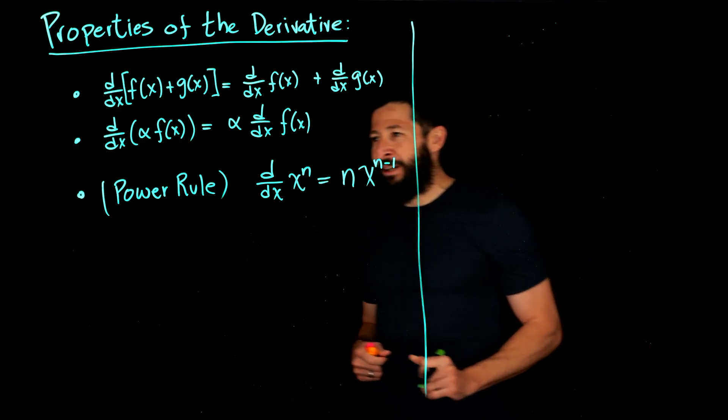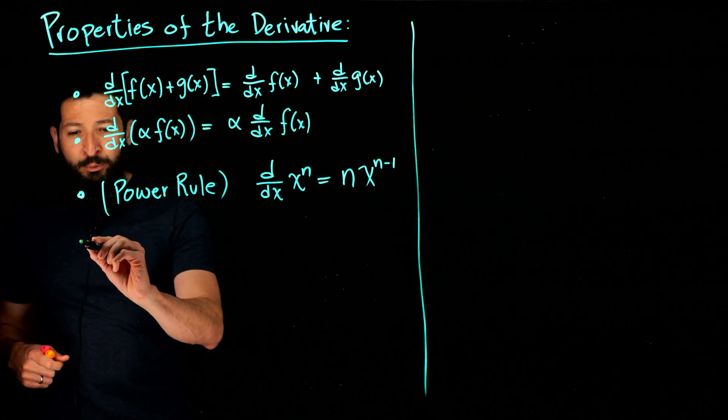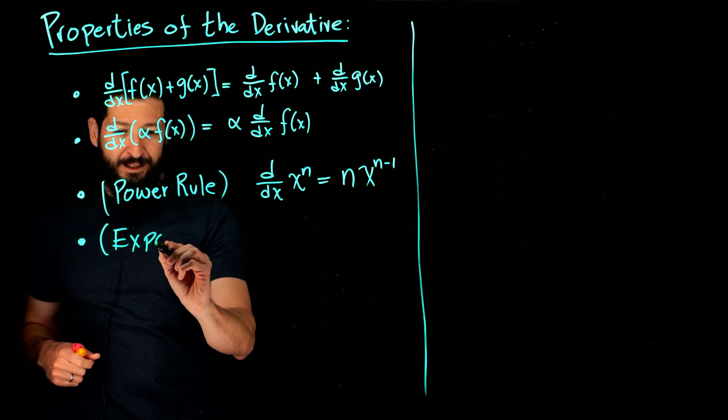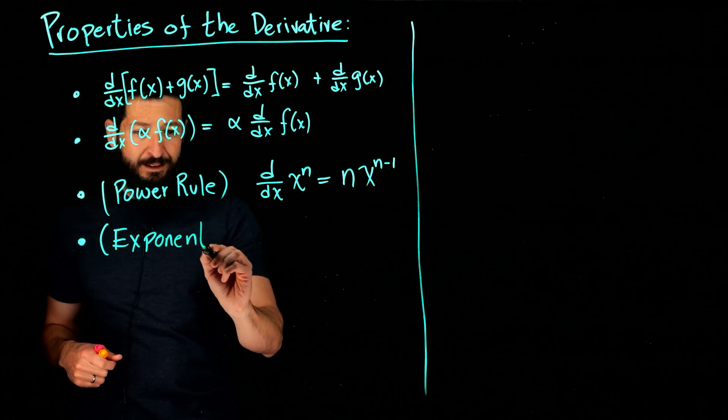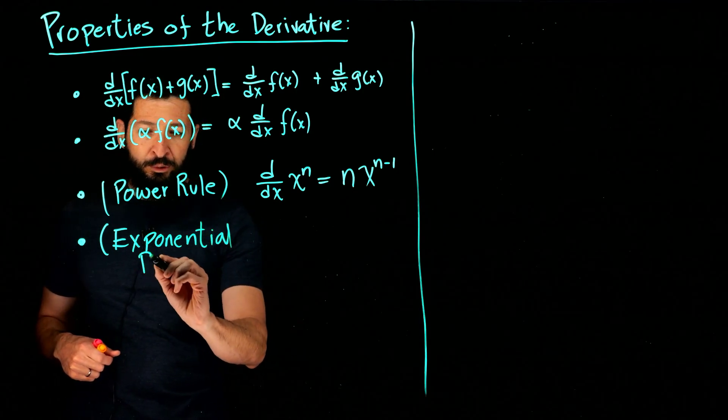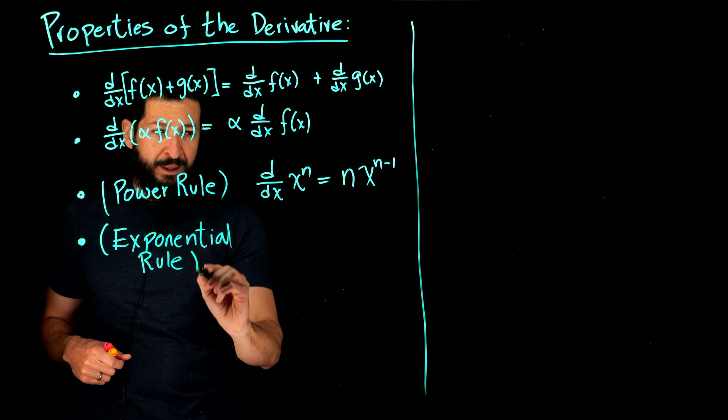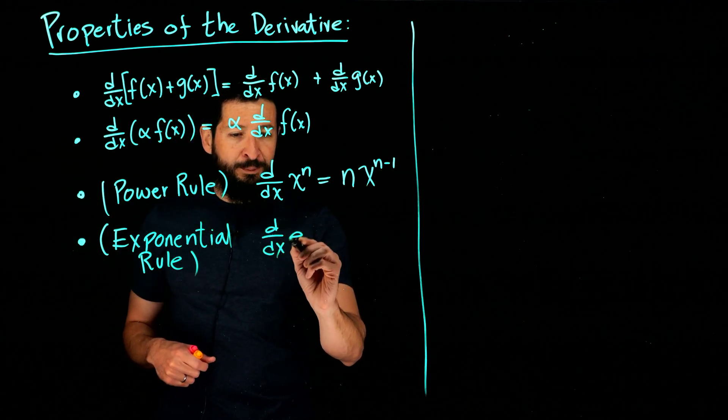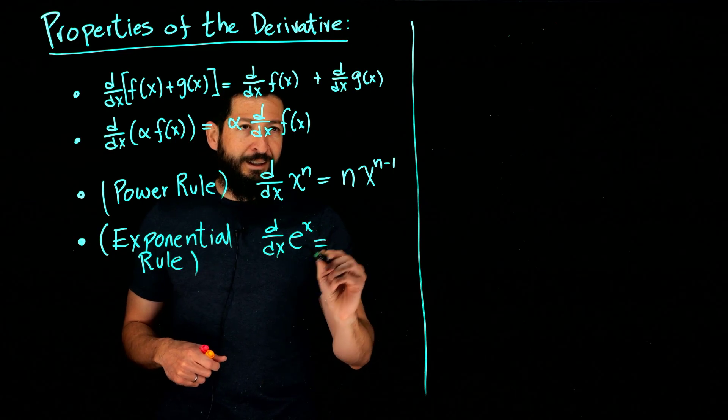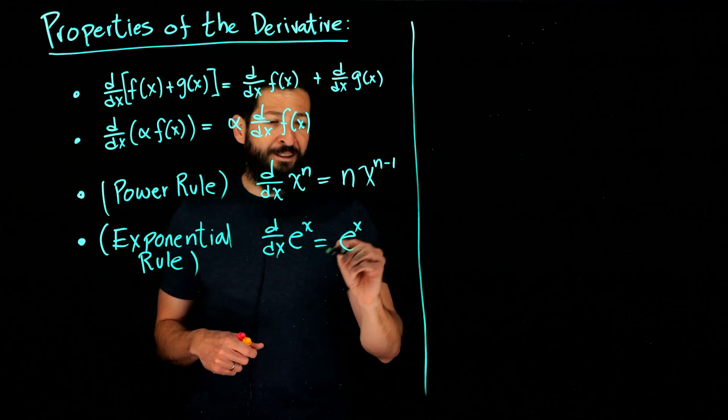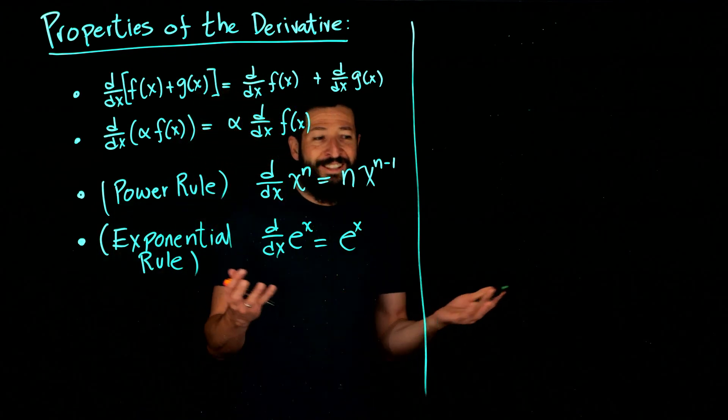Alright guys, so now we're going to do the exponential rule. I'll write the rule here so I can fit everything. The derivative of the exponential e to the x is the best derivative of all: e to the x. The derivative does nothing to it, so it just stays like that. That's great.